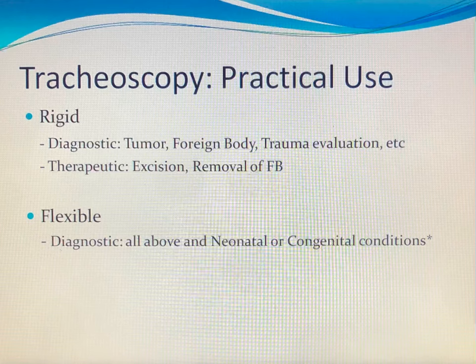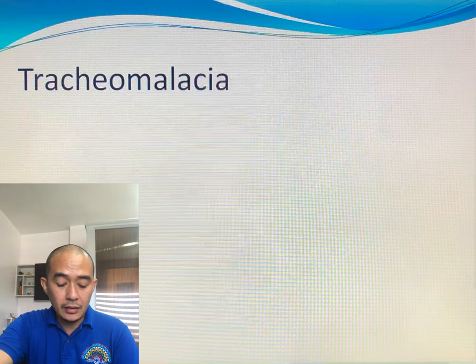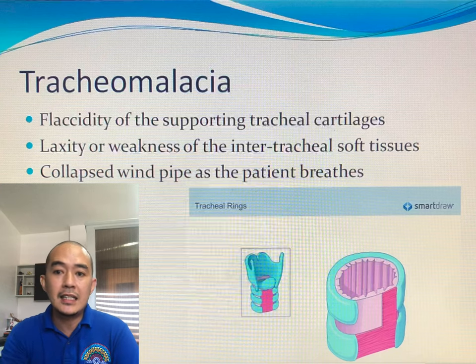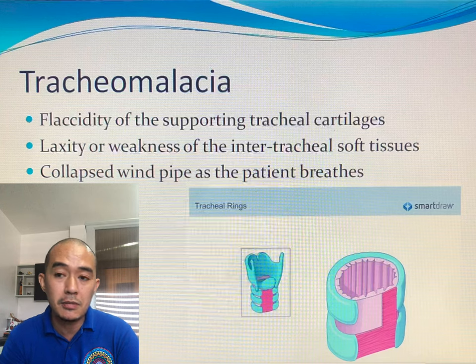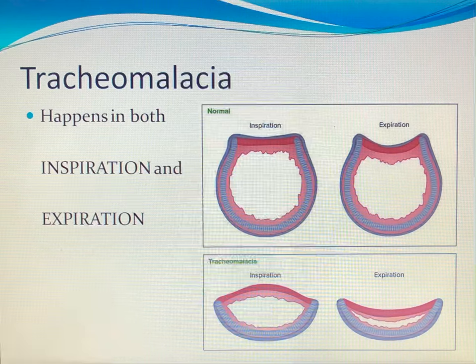Excision is also best done in a rigid way. Flexible tracheoscopy is more helpful in diagnosing neonatal or congenital conditions that may need a flexible apparatus to observe. One such condition is tracheomalacia — the flaccidity of the supporting tracheal cartilages, involving the trachealis muscle and inter-tracheal soft tissues. There is laxity or weakness causing collapse of the windpipe as the patient breathes, commonly during expiration.